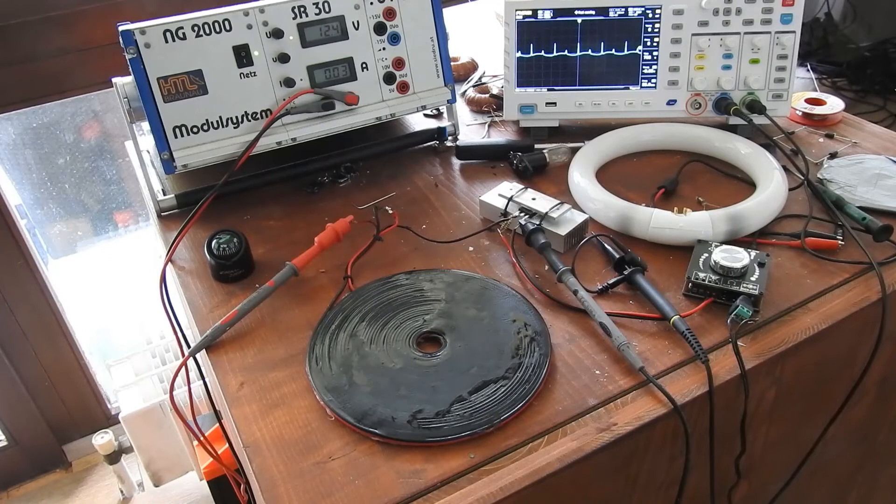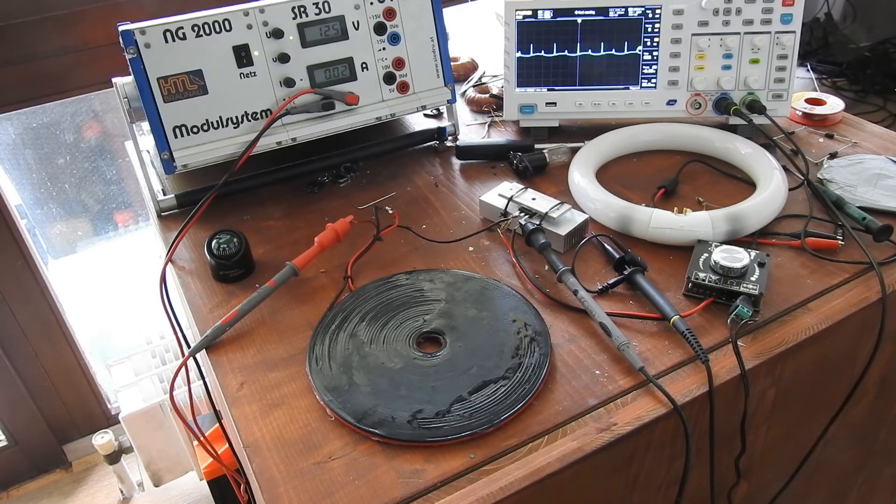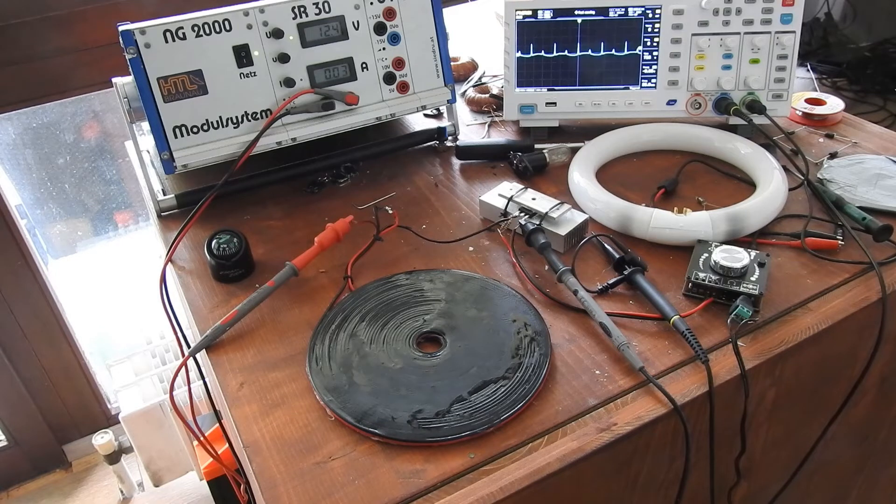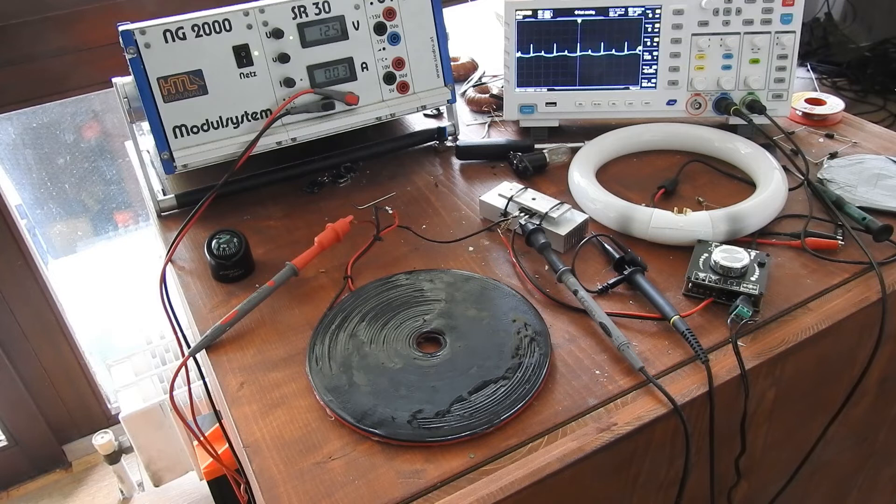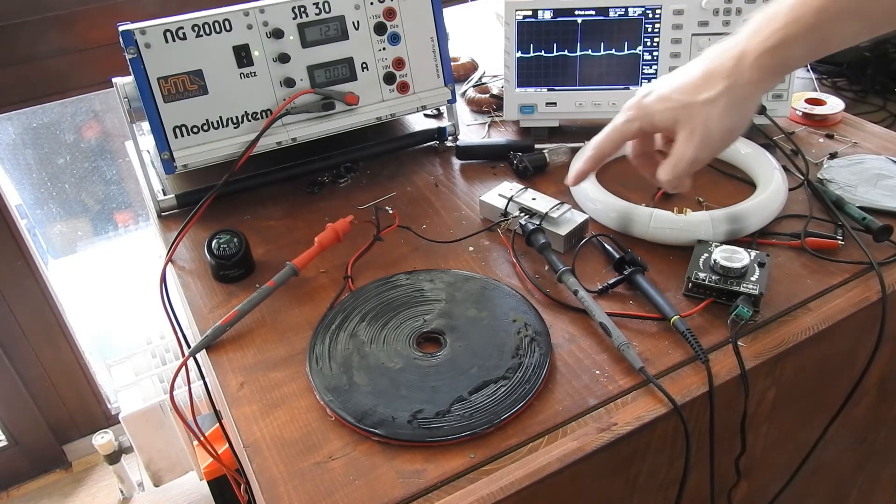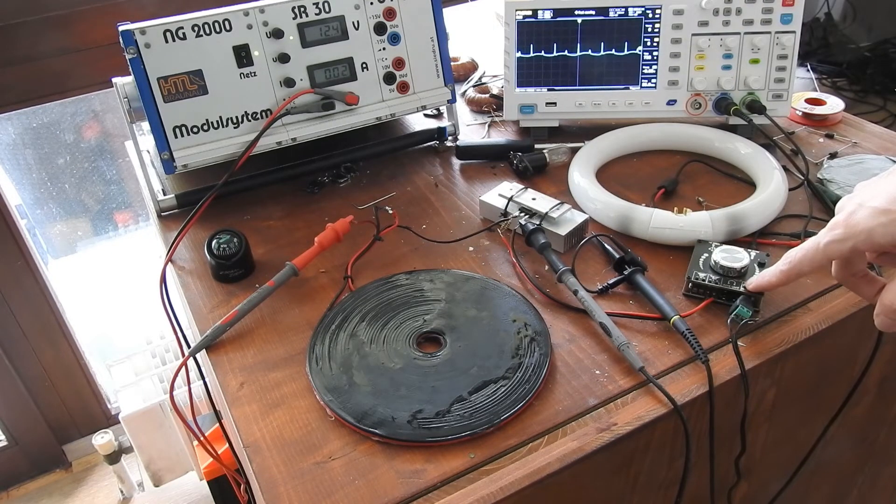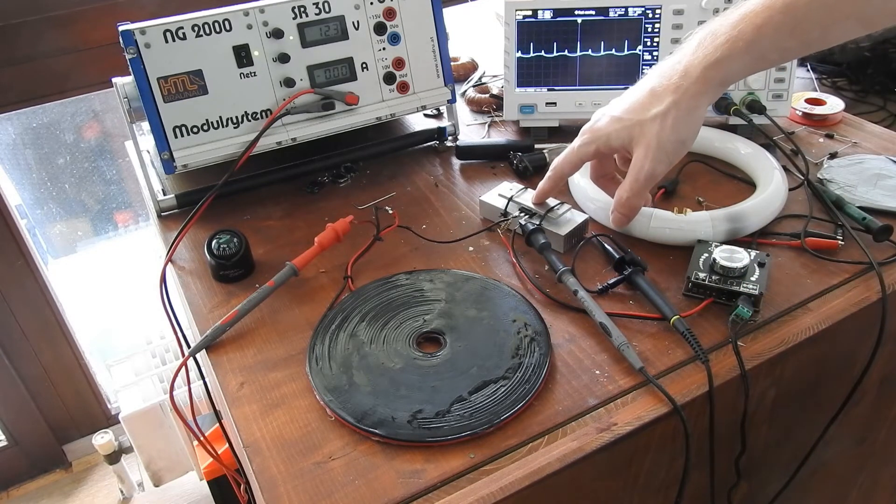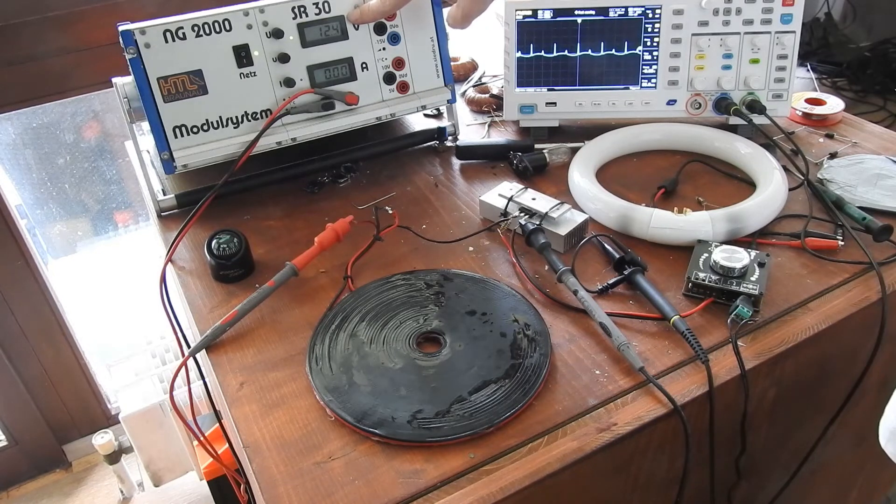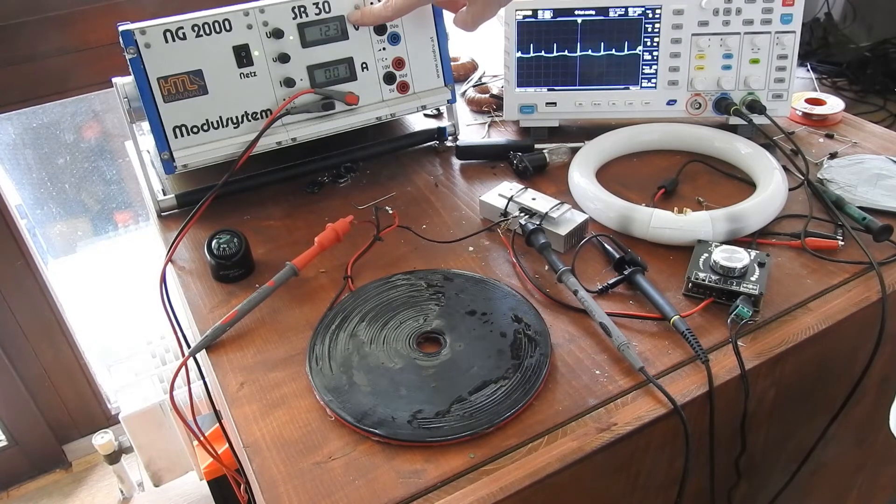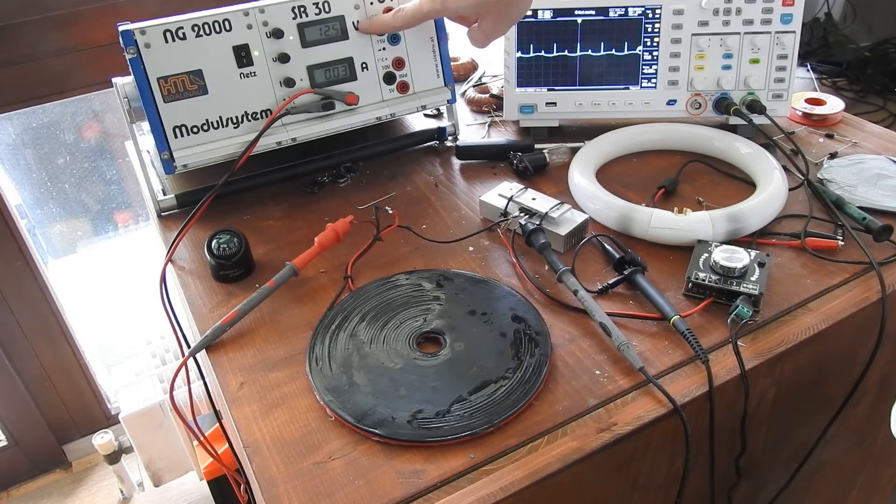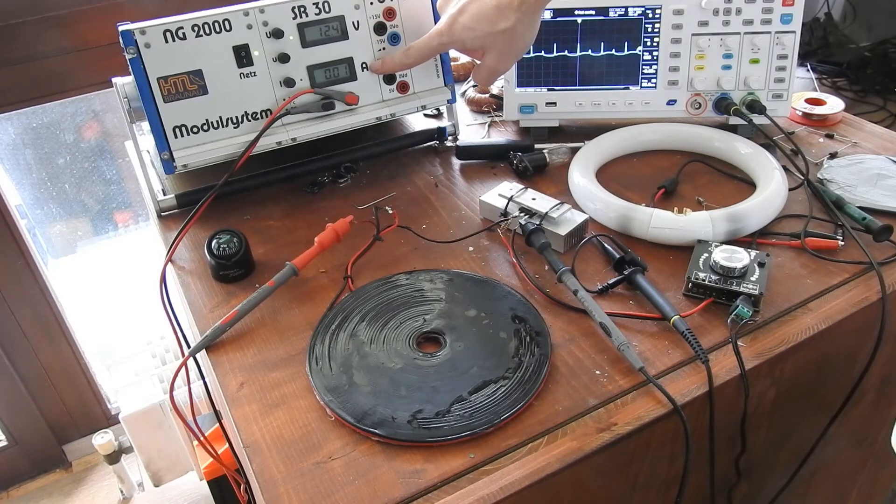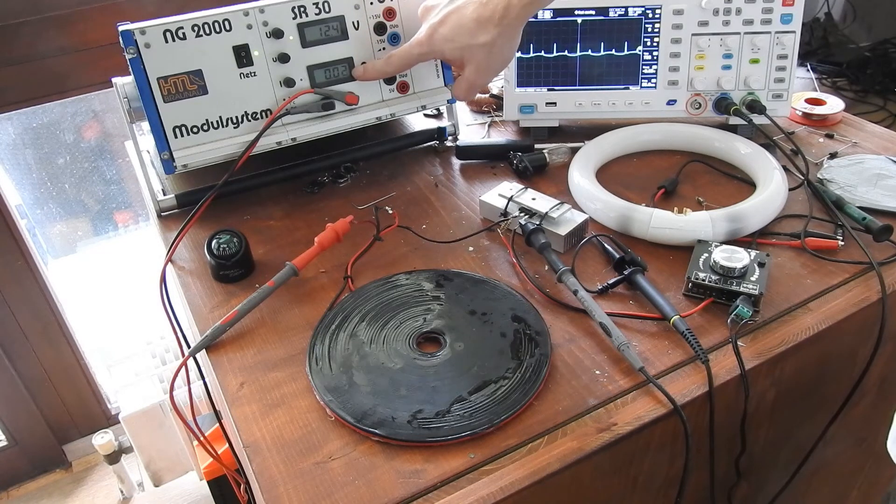And now for our third method of driving the bifilar coil. I have connected it the same way as I have seen it before. Meaning that I am driving a MOSFET with a signal generator that switches the MOSFET on and off. And this MOSFET switches the DC voltage coming from my power supply. And as you can see again we are using almost zero power. It is very low current that we are using.